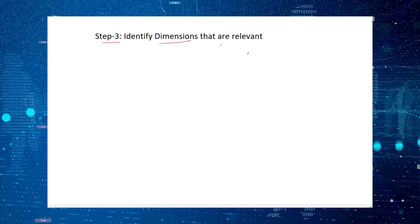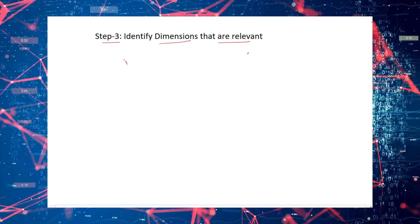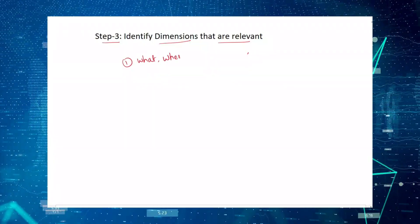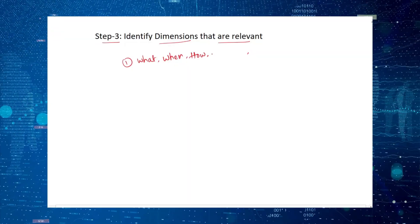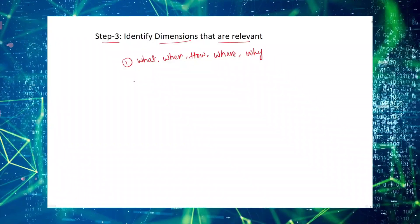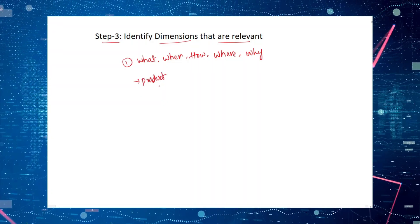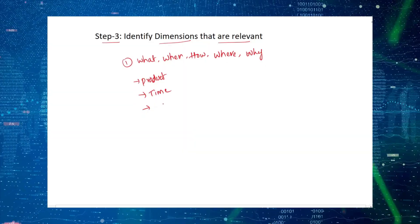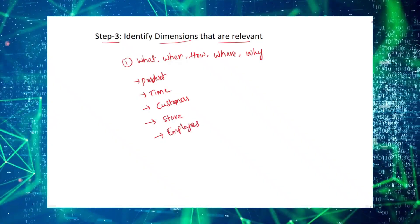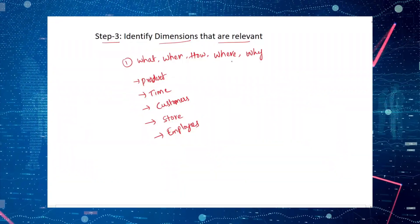The third step is identifying the dimensions that are relevant. The simple trick is to ask: What happened? When did it happen? How did it happen? Where did it happen? And why did it happen? To answer these questions, you get dimensions like products (what), date/time (when), customers (how), store (where), and employees (why). By asking these five questions, you can identify all the relevant dimensions.